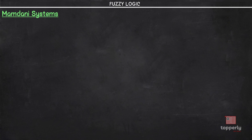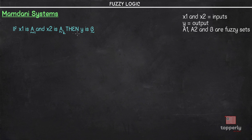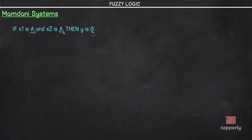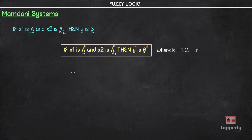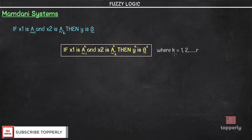Let us consider a simple rule system where the rule has two antecedents and one consequent. We have two antecedents — if x1 is A1 and x2 is A2 — and one consequent: then y is B. Here x1 and x2 are inputs, y is an output, and A1, A2, and B are all fuzzy sets or fuzzy numbers. For multiple rules, we rewrite it as: if x1 is A1k and x2 is A2k, then yk is Bk, where k = 1, 2, …, r, representing the total number of rules.